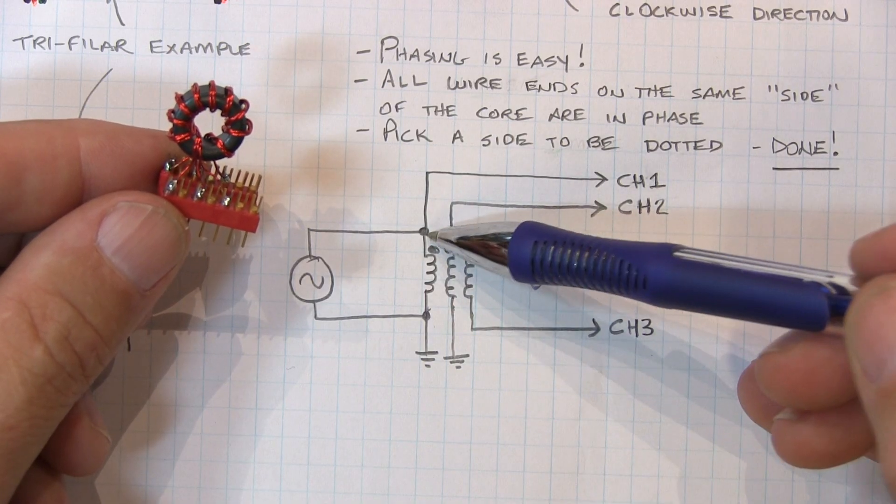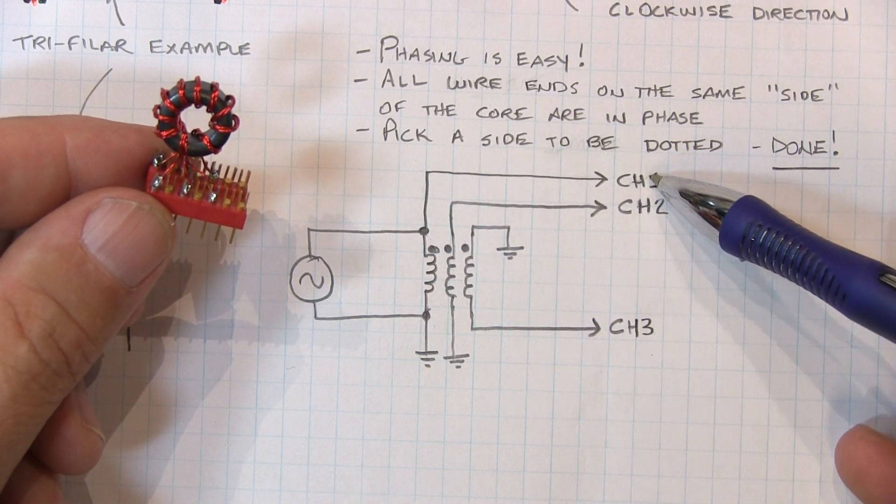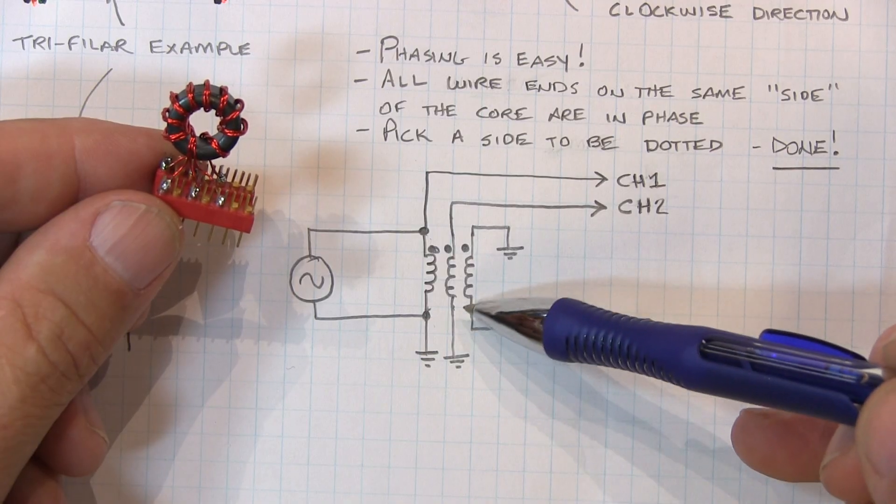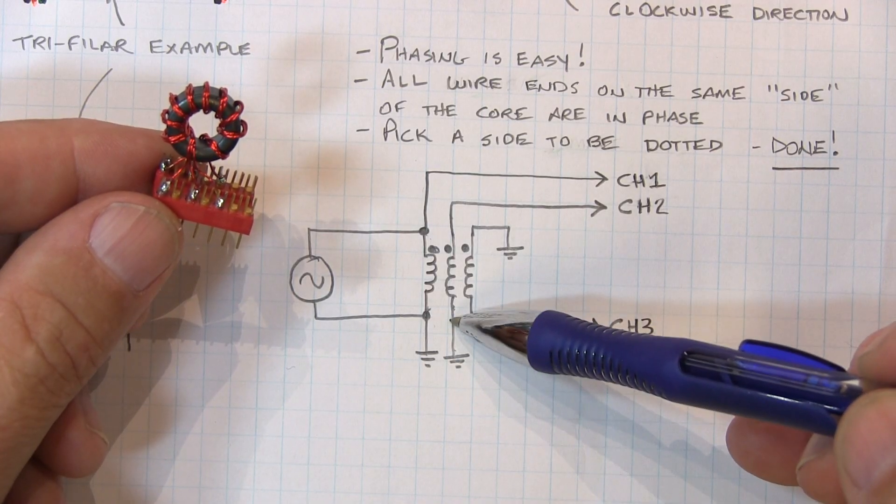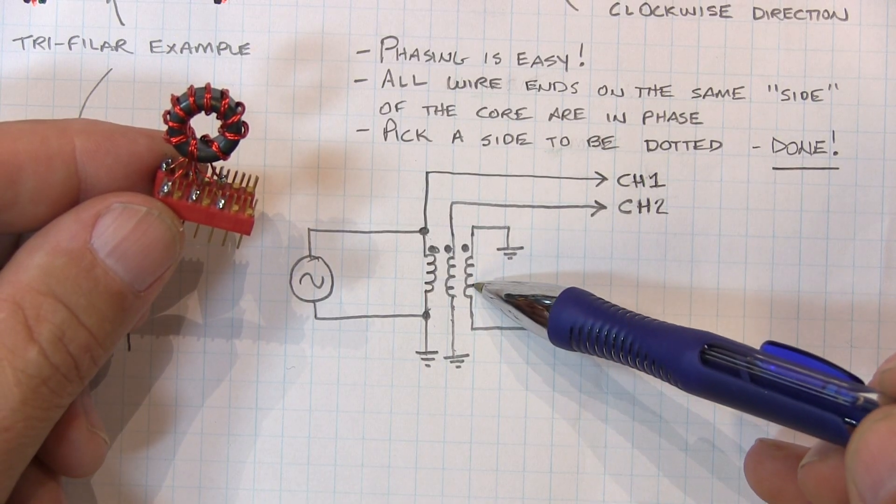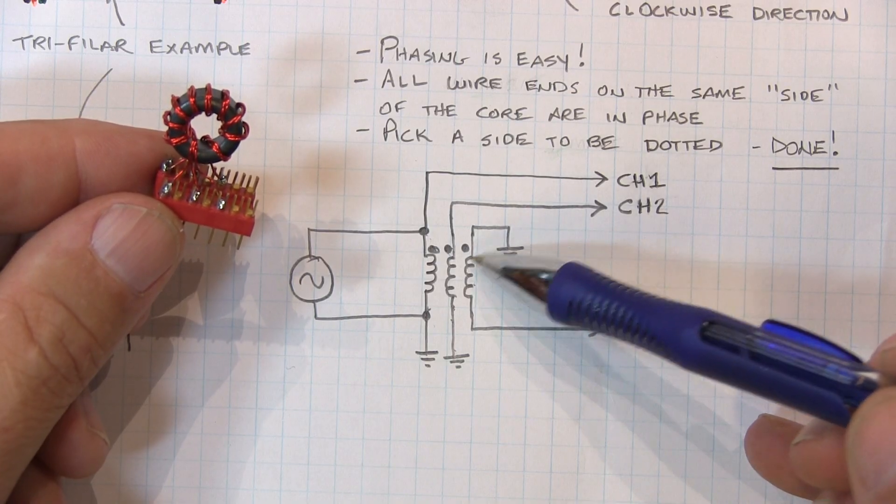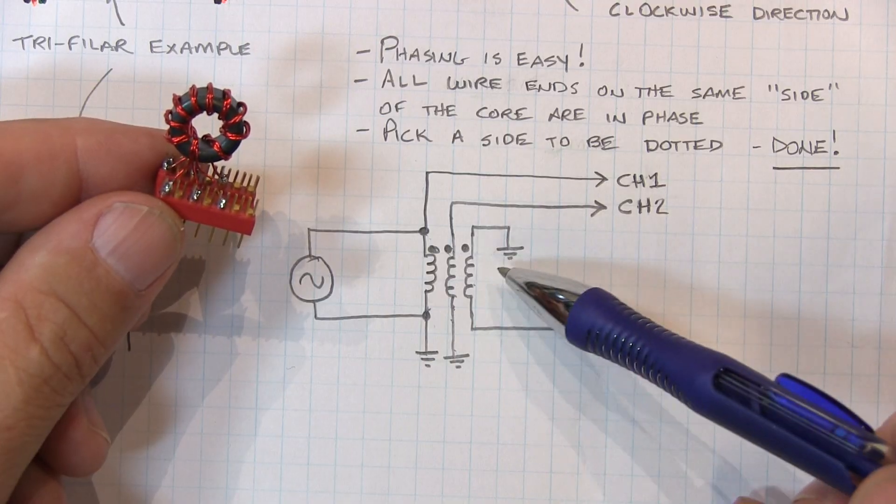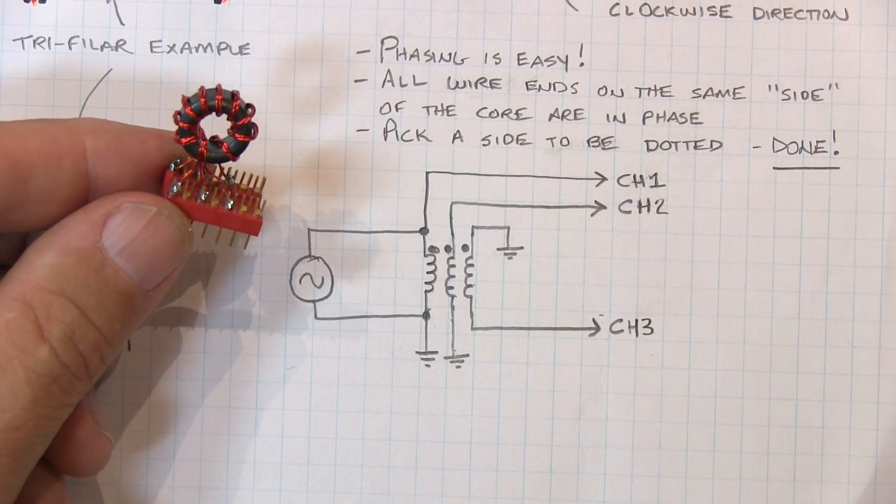The other end just up here, and we'll look at that side on channel one on the scope. And then in the same phase, ground it on the same side and take the output from the dotted side into channel two. And then on the third winding, we'll ground the dotted side and take the output from the other side, and we'll see that these two guys are essentially out of phase.